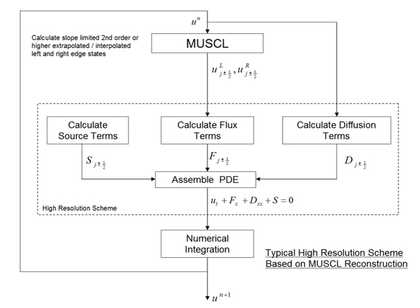MUSCL methods are generally second-order accurate in smooth regions, although they can be formulated for higher orders and provide good resolution, monotonic solutions around discontinuities. They are straightforward to implement and are computationally efficient.